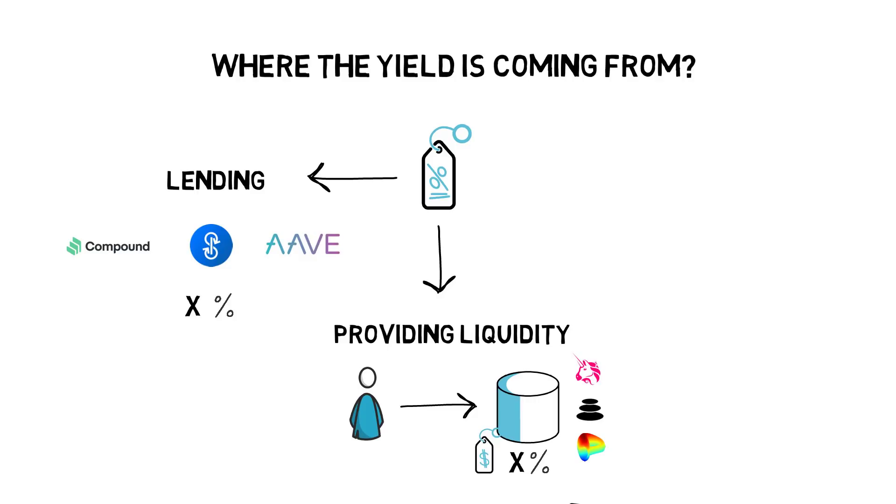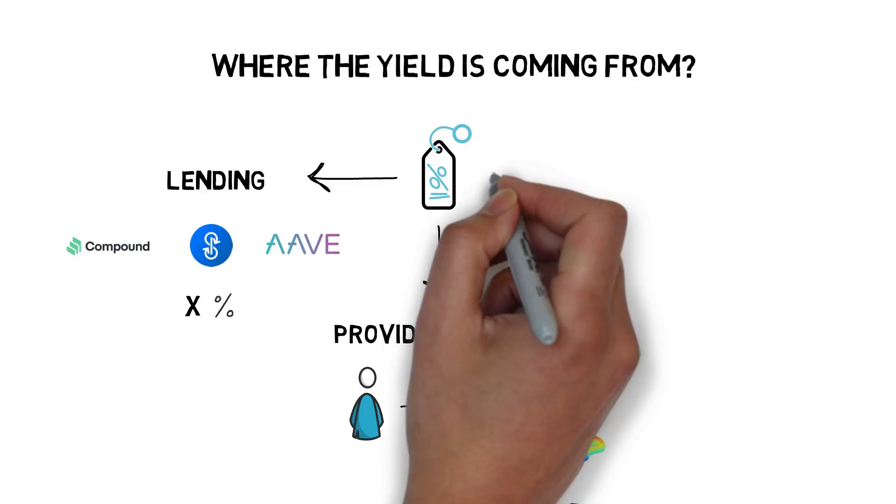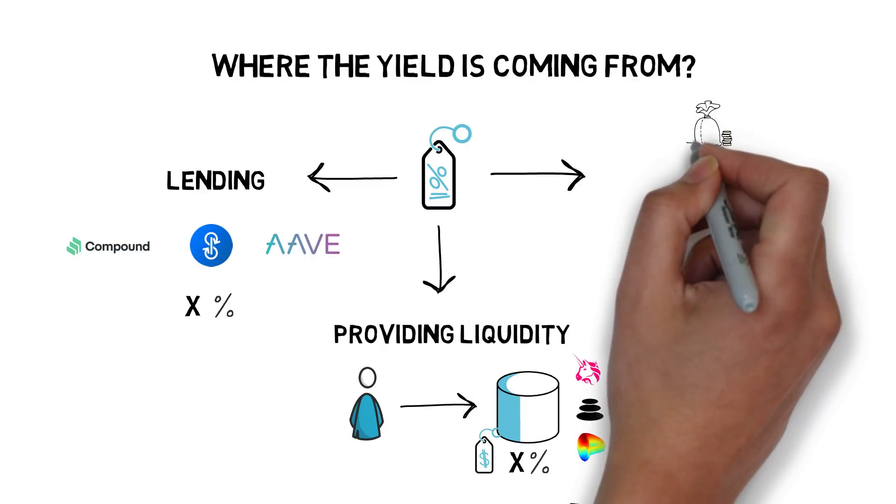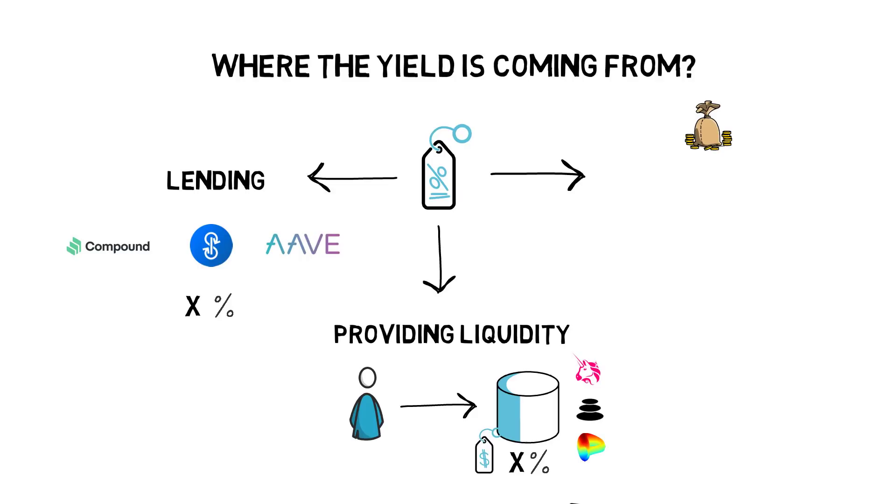You also need to make sure you understand what impermanent loss is. Now, it's time for the most lucrative way of generating a yield on your assets in decentralized finance: the previously mentioned liquidity mining.